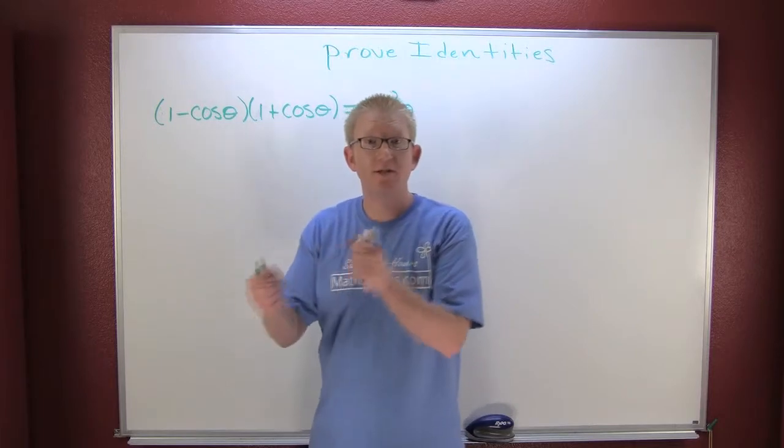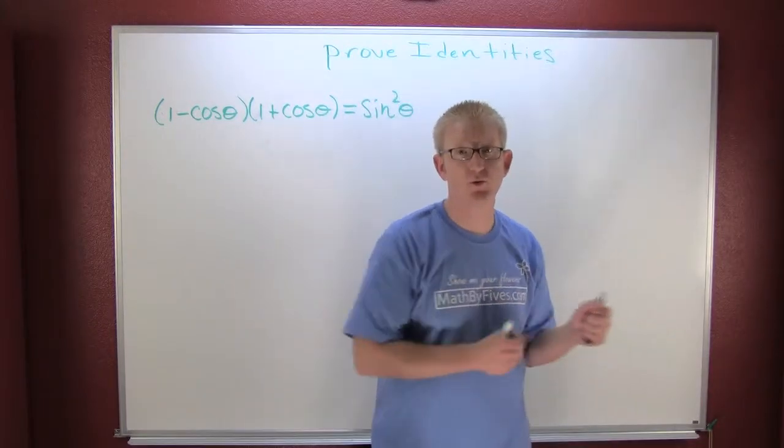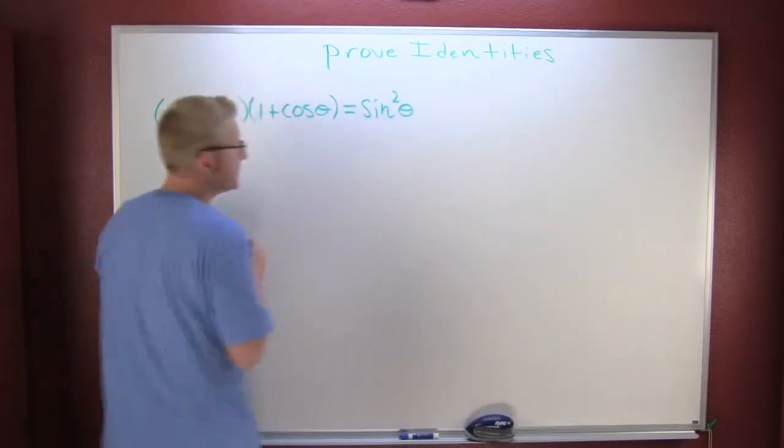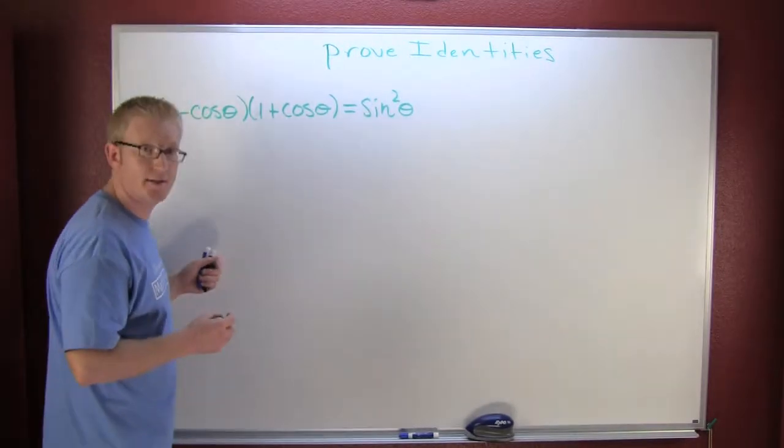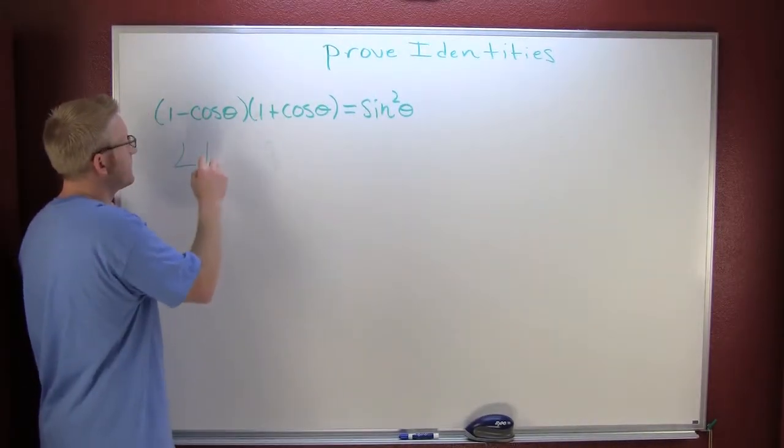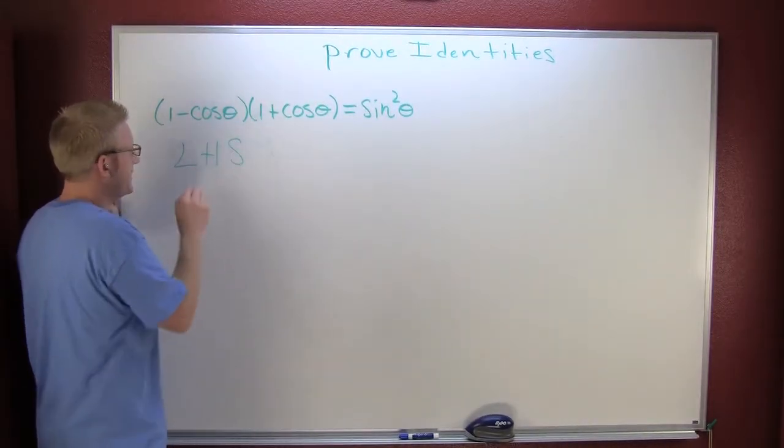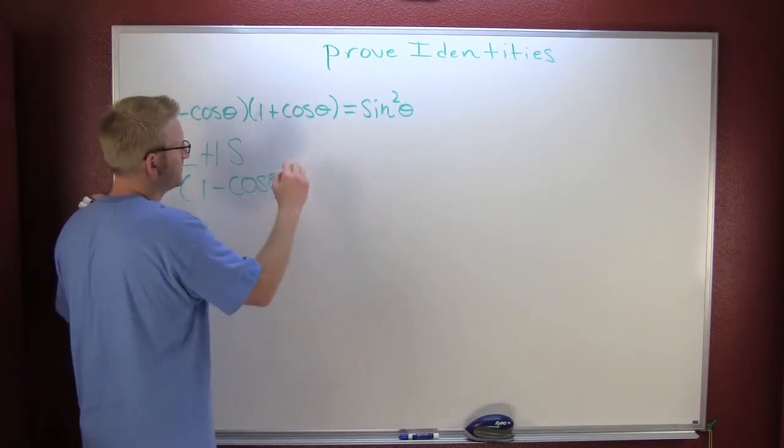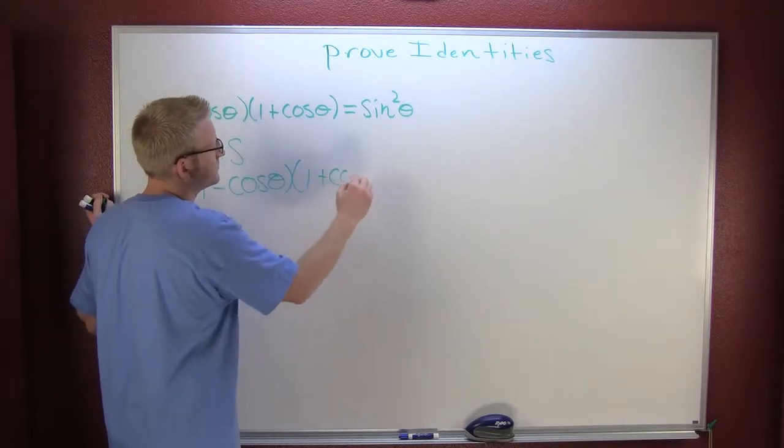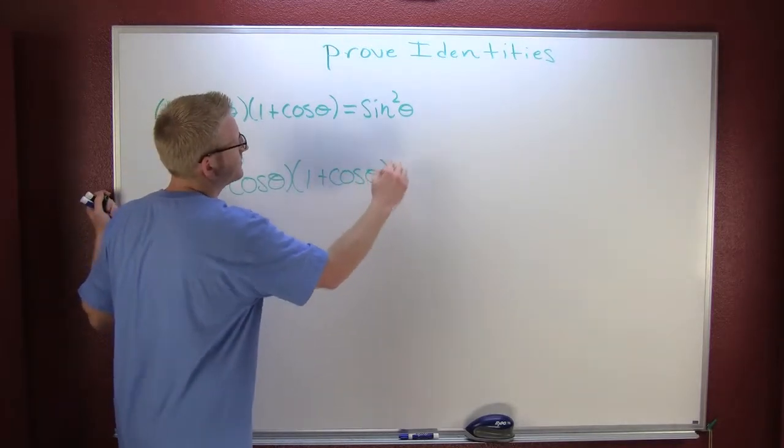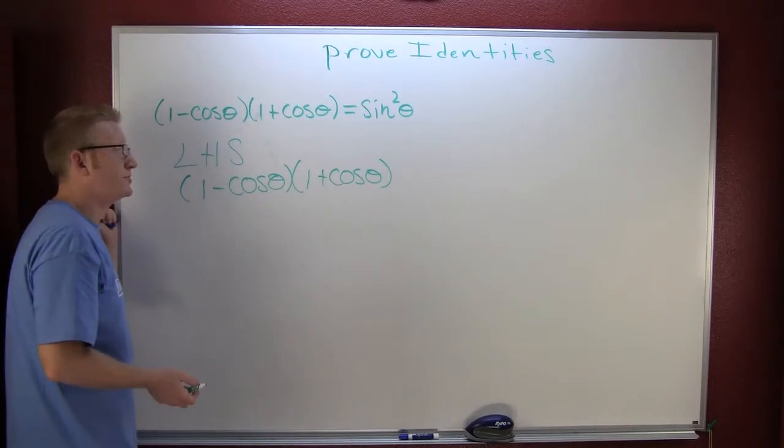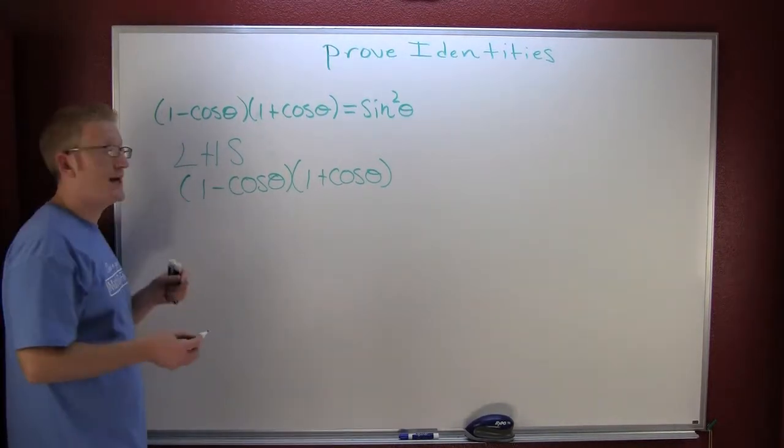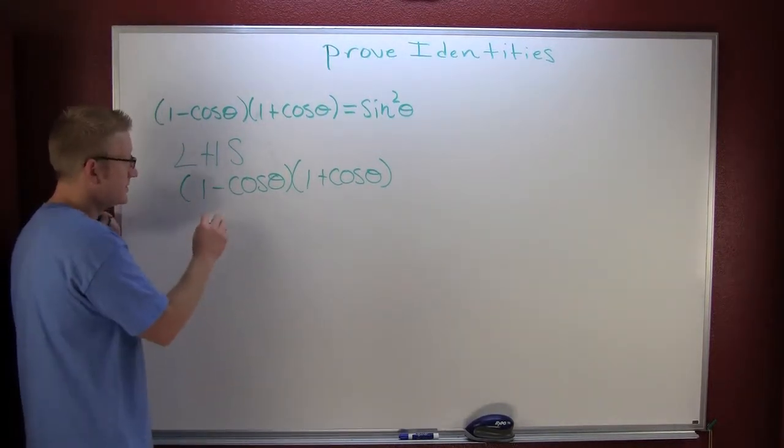Remember, if you're gonna prove an identity, you start on one side and through a chain of equalities you show the other. So here I'm gonna start on that left-hand side and I'm gonna write it because I'm not lazy. And then how are you gonna multiply that out?